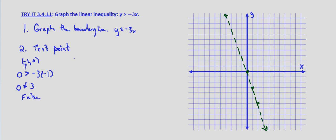So let's test a point over there. Let's test 1, 0. So is 0 greater than negative 3 times 1. Is 0 greater than negative 3. It is greater than negative 3. 0 is greater than negative 3.